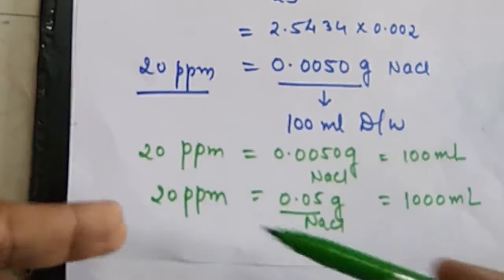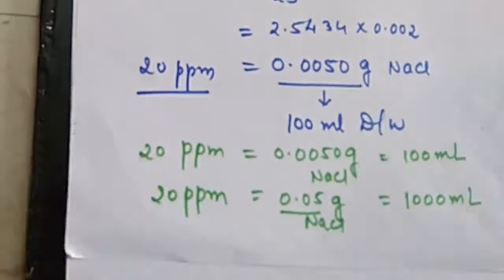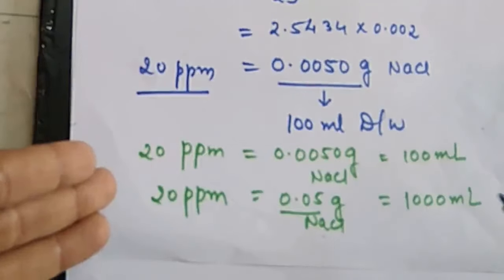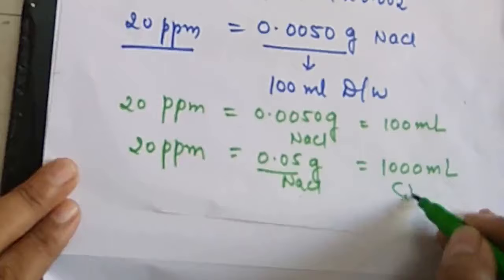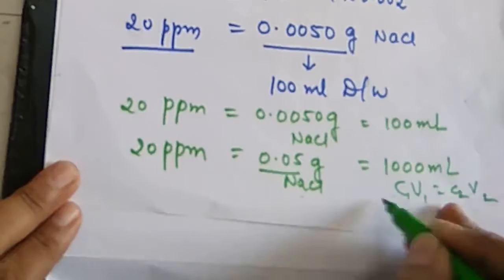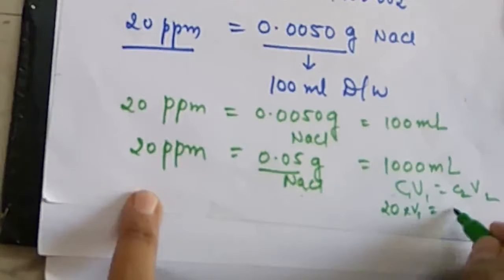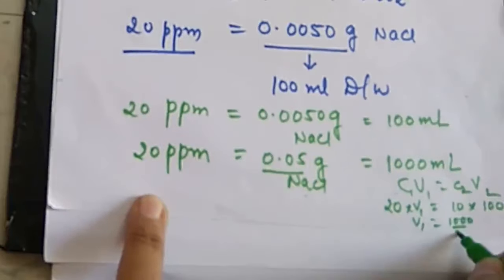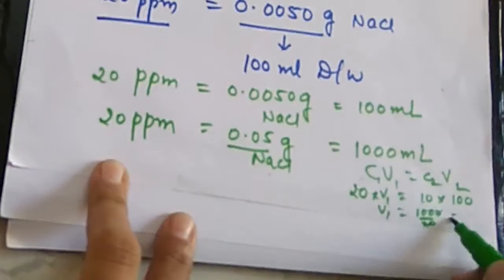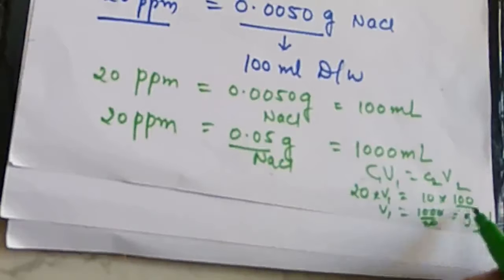We can also prepare lower PPM solutions from a stock solution. For example, prepare a 1000 PPM stock solution and then dilute it to 100 PPM, 50 PPM, or 20 PPM as required. Using the dilution equation C₁V₁ = C₂V₂: from 20 PPM stock, to prepare 10 PPM in 100 ml, V₁ = (10 × 100) / 20 = 50 ml. So take 50 ml of the 20 PPM solution and make it up to 100 ml.